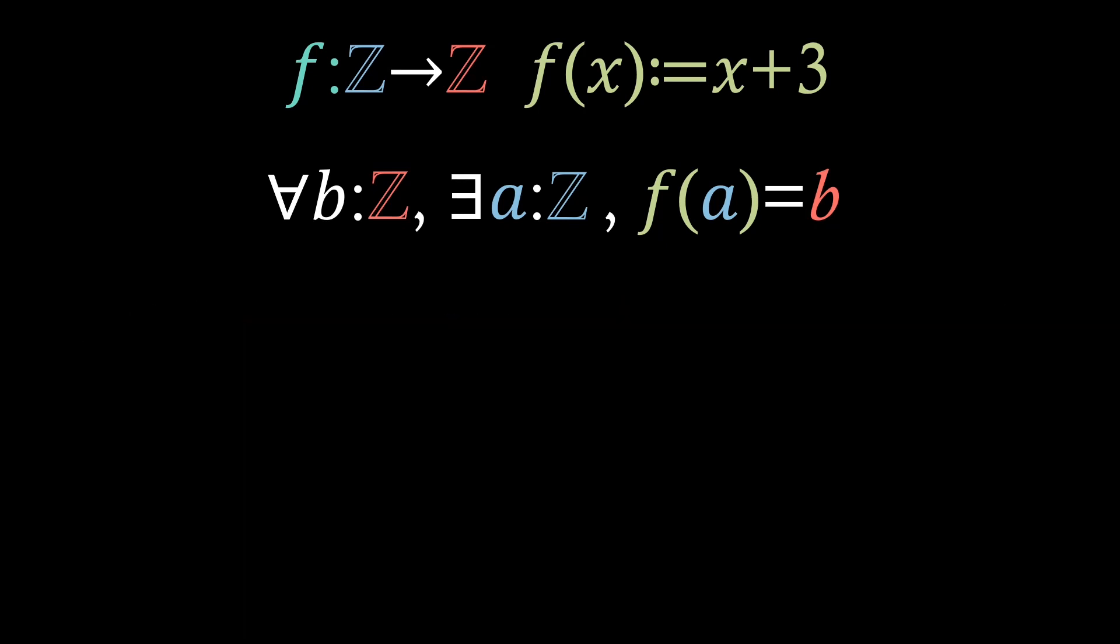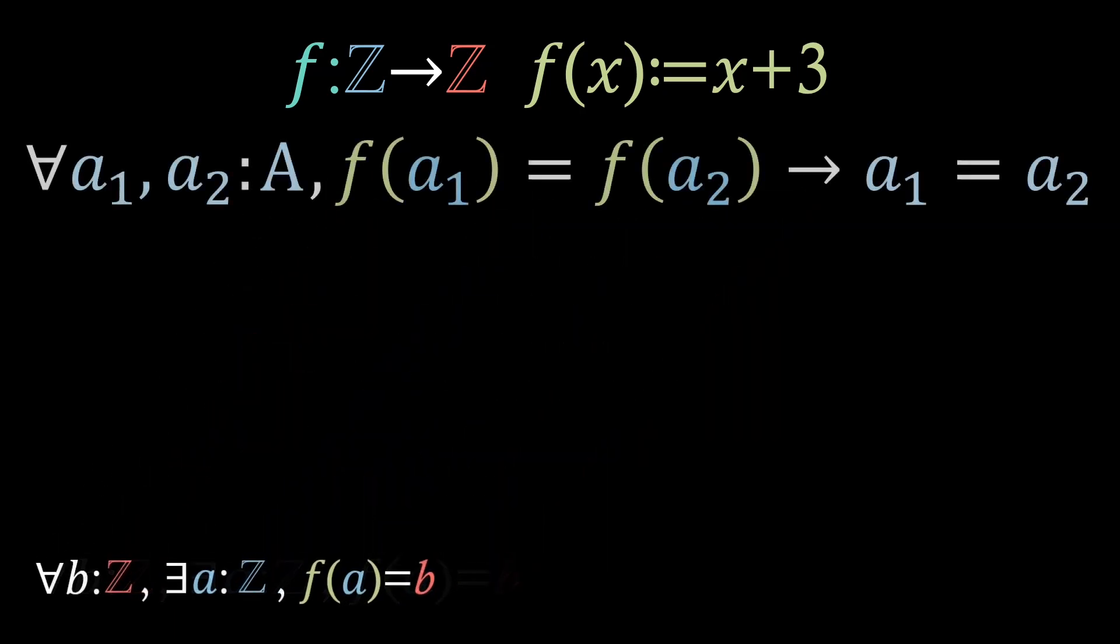As we have shown our function is surjective, all we need to do now is show that it is injective. So, let's recall the definition of injectivity, and let's apply it to our case, where the domain is just an integer. Then, let's take two arbitrary a1 and a2 in the integers.